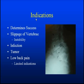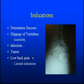First, I'm going to look at the indications, meaning the reasons for which we do a fusion. The most common reasons fusions are done include slippage of the vertebrae — where we can see the vertebrae all align well, and then there is a forward slippage of one vertebra relative to the others — infections, tumors, or low back pain. Indications are important because they determine the success of the surgery. The most successful surgeries are done for slippage, infection, or tumors. Low back pain is a bit more unpredictable.